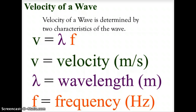Some basic formulas apply to waves. The velocity formula is: velocity equals lambda times frequency, where velocity is measured in meters per second, lambda (λ) is the Greek letter for wavelength — the crest-to-crest distance — and frequency is measured in hertz, which is waves per second — how many waves pass a given point each second.